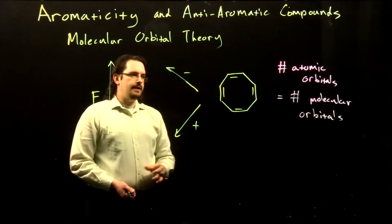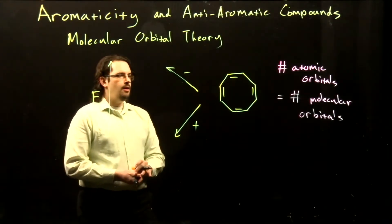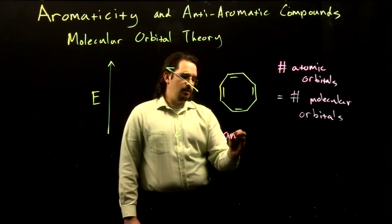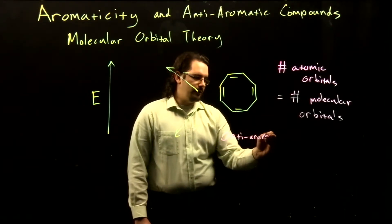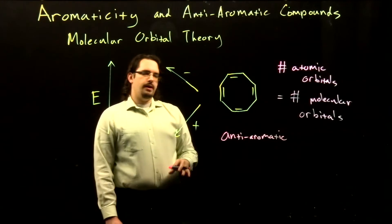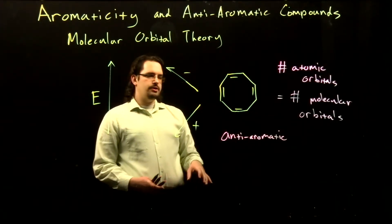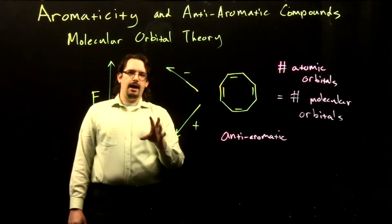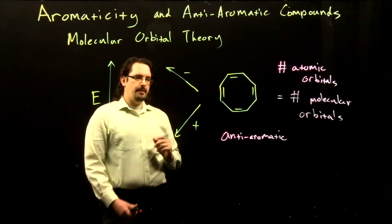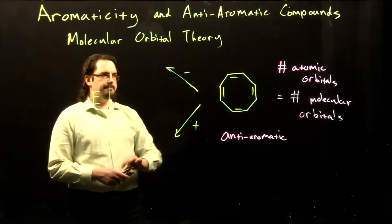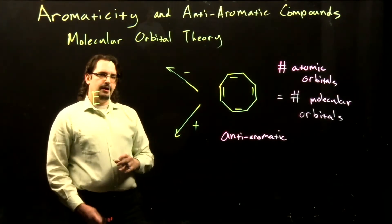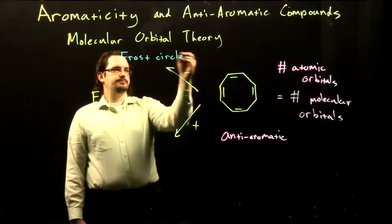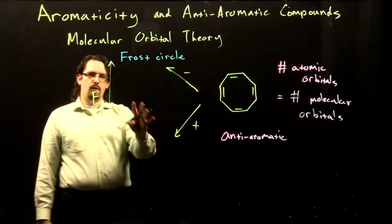So now let's examine the case of our cyclooctatetraene and see if we can explain why it is anti-aromatic based on our molecular orbital theory. We're going to have eight p orbitals contributing to eight molecular orbitals — half forming in an additive manner and half in a subtractive or negative manner. In order to draw out my orbitals here, I'm going to use a little trick called a Frost circle, which will help me know where to put my orbitals.